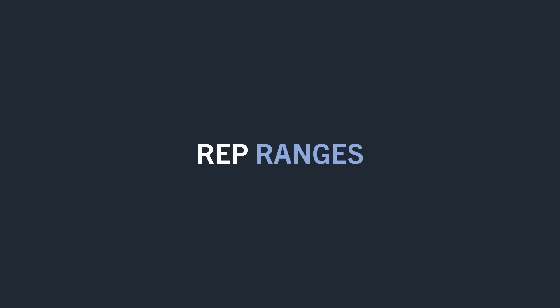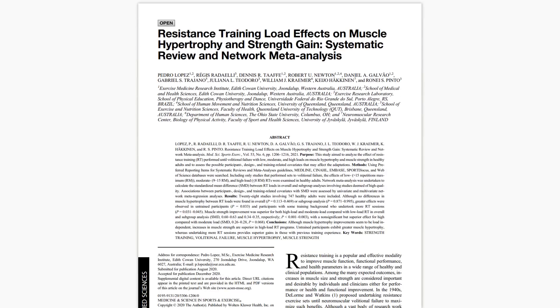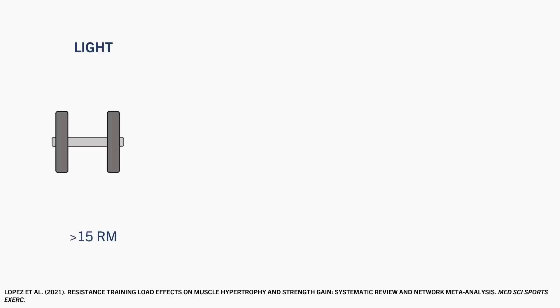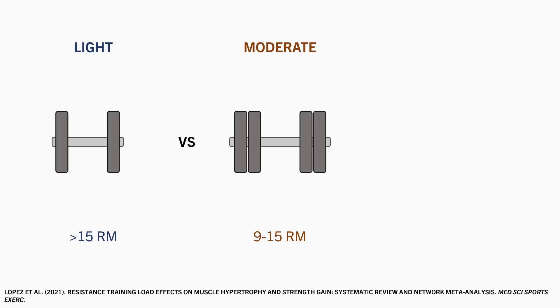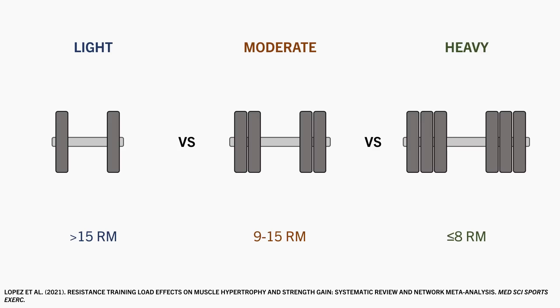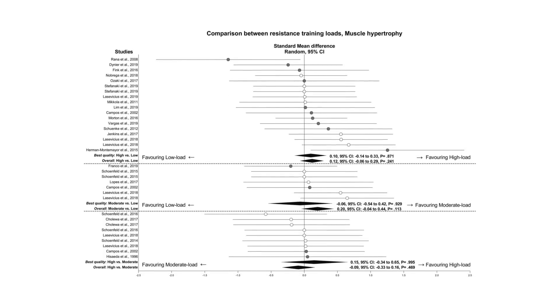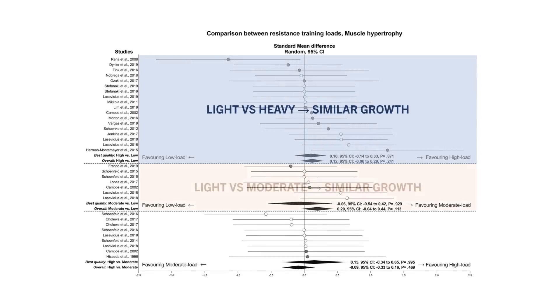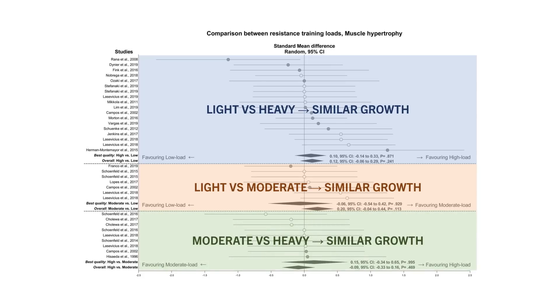Another body of evidence to look at is rep ranges for hypertrophy. While the traditional 6-12 rep range is most commonly used, the effective hypertrophy rep range seems to be much wider. A meta-analysis compared the effects of training with different loads on muscle growth, grouping interventions into light loads (greater than a 15 rep max), moderate loads (9 to 15 rep max), and heavy loads (8 rep max or heavier). Importantly, all included interventions had participants training to failure. Overall, muscle growth was similar between all load categories, with no significant differences between light, moderate, or heavy loads.